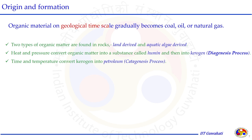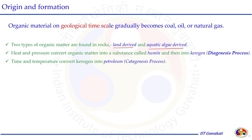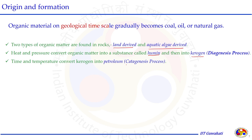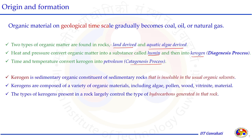Two types of organic matter are found in rocks: land-derived and aquatic-life-based organic matter. This matter at several thousand feet depth is exposed to heat and pressure that converts it to a substance called humin, which then got converted into kerogen. The process of converting organic matter to kerogen is called diagenesis. Kerogen is a sedimentary organic constituent of sedimentary rocks that is insoluble in usual organic solvents. Kerogen is composed of a variety of organic materials that may include alkyl, pollen, bode, and bituminite materials.